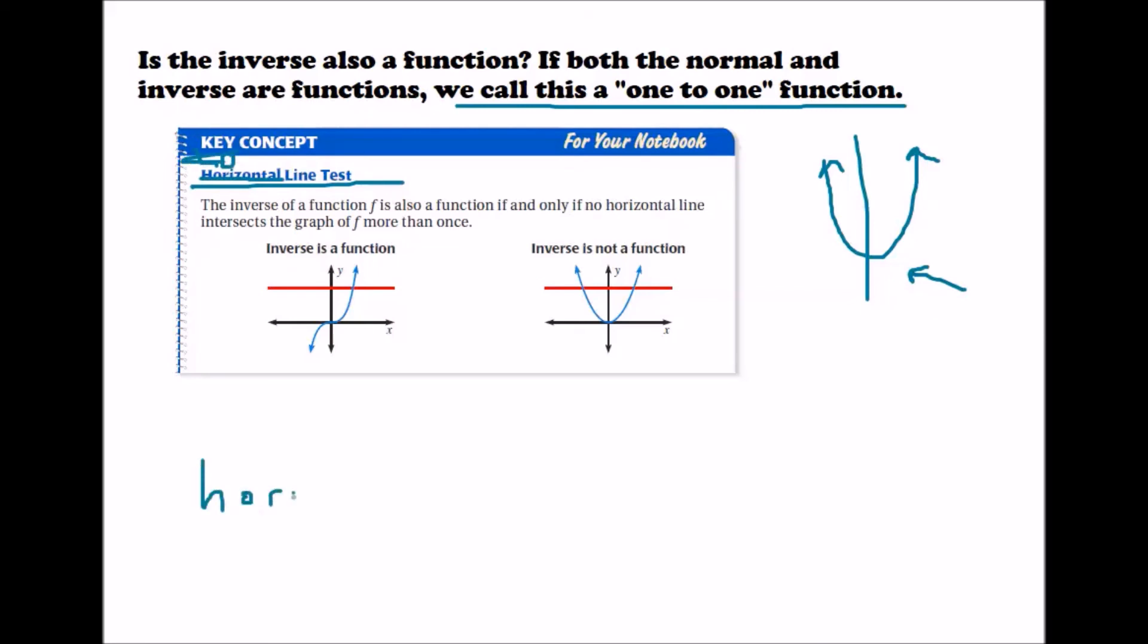The horrible line test to check if the inverse is a function. So in this one you can check with the horizontal line test, the inverse is a function because it only touches once no matter where you draw it. Here the inverse is not a function because it touches twice here and here. So if it passes both the vertical line test and the horizontal line test, it is a one-to-one function.